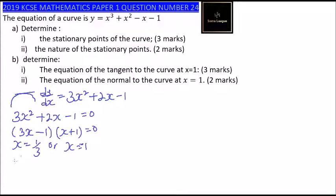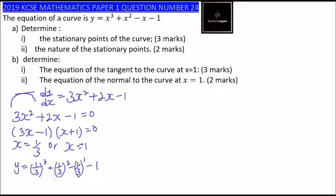Substituting x equals 1/3 into the function: y equals (1/3) cubed plus (1/3) squared minus (1/3) minus 1. Using a calculator to compute this, you get minus 32 over 27. So the turning point is x equals 1/3 and y equals minus 32/27.